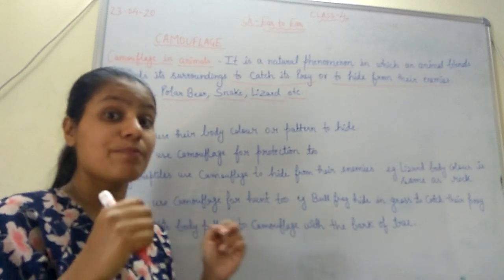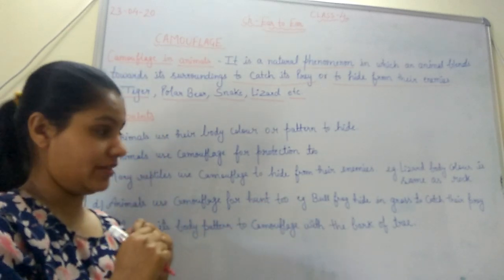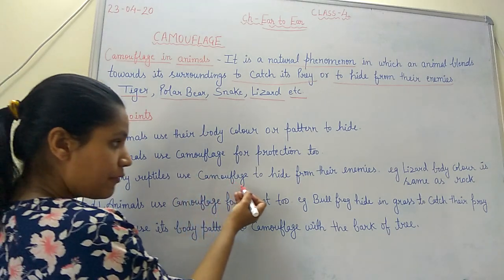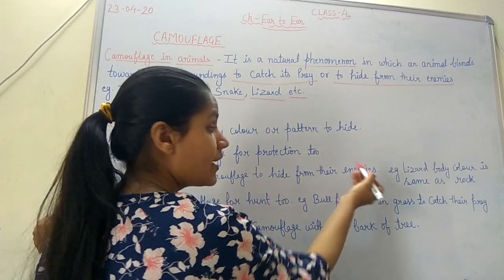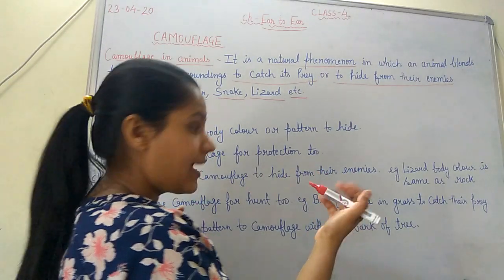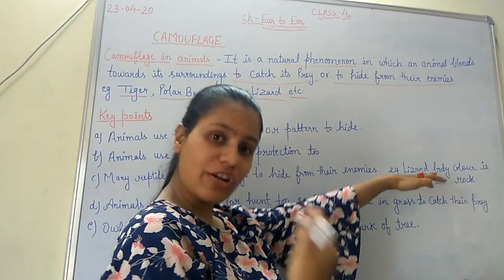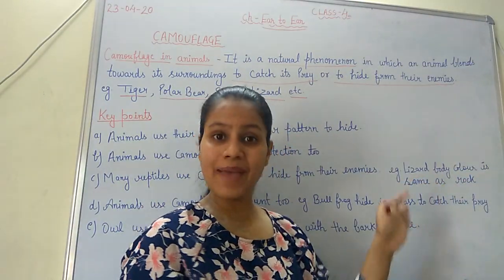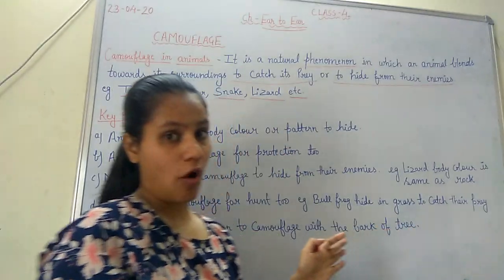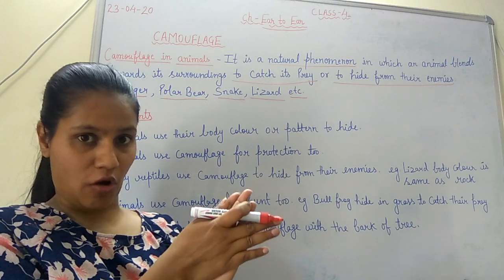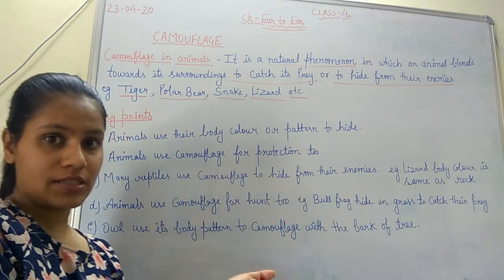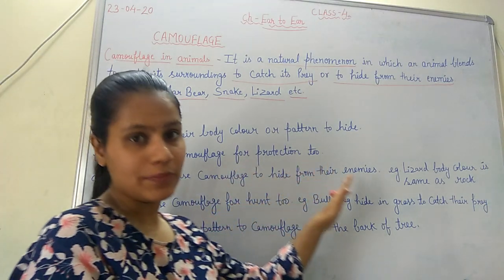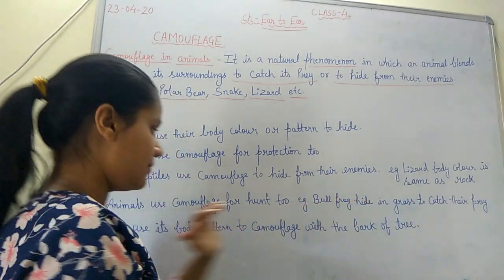Animals also use camouflage for protection. Many reptiles use camouflage to hide from their enemies. For example, the lizard's body color is the same as a rock, so it totally blends with the rock and its surrounding so that it can hide from its enemies.